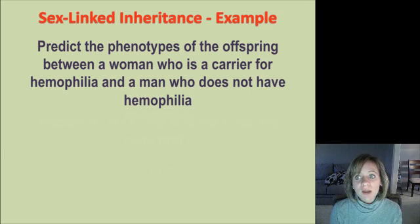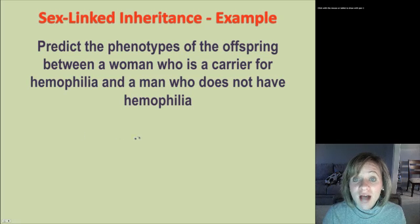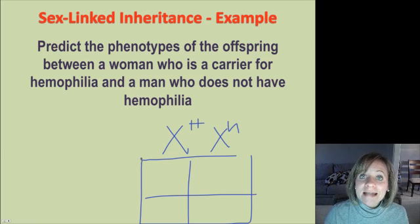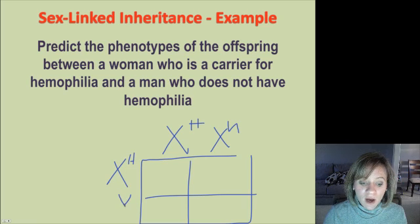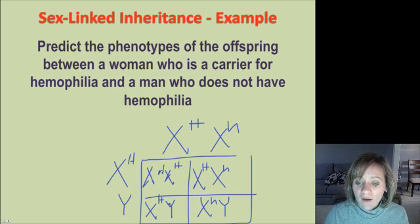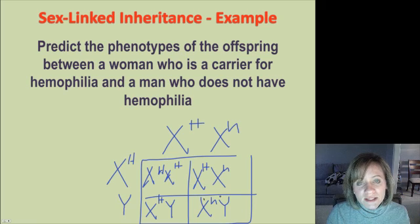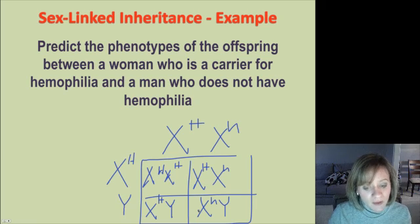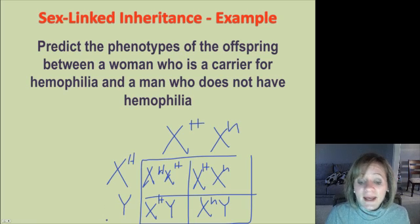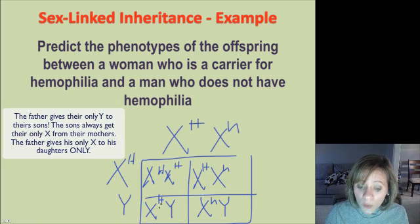Let's predict phenotypes of offspring between a woman who is a carrier for hemophilia and a man who does not have hemophilia. The female carrier is X^H X^h and the male is X^H Y. Filling in the Punnett square, 75% of offspring are normal. One offspring will have hemophilia, and notice that it is a male. Start thinking about why we see these sex-linked diseases more in males than in females. None of the females have hemophilia, but half of the males do.